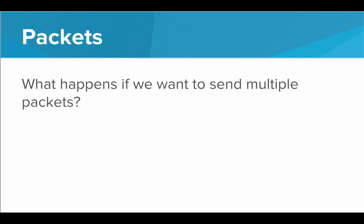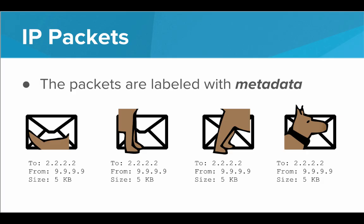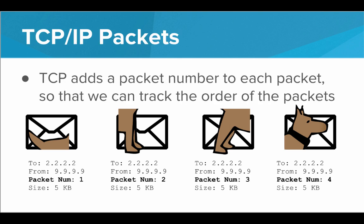But what happens if we want to send multiple packets? We're going to need a new protocol for this — introducing the Transmission Control Protocol, or TCP. TCP is a protocol that allows for sending multiple packets between two computers. TCP checks that all the packets made it and that they can be put together in the proper order once they arrive. With just IP packets, all we had for metadata was the from address, the to address, and the size. With TCP, we actually add one more thing: the packet number. We say this must come first, second, third, fourth. So TCP adds a packet number to each packet so we can track what order they're supposed to come in. When we're sending packets across the internet, we're almost always using TCP and IP together — so we usually say TCP/IP.